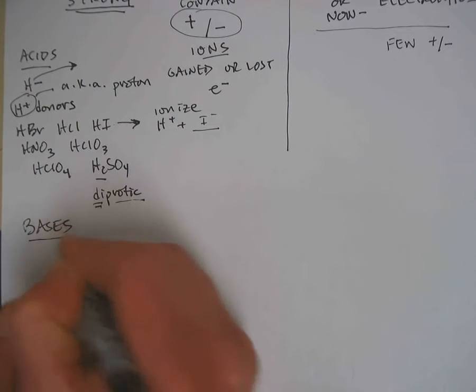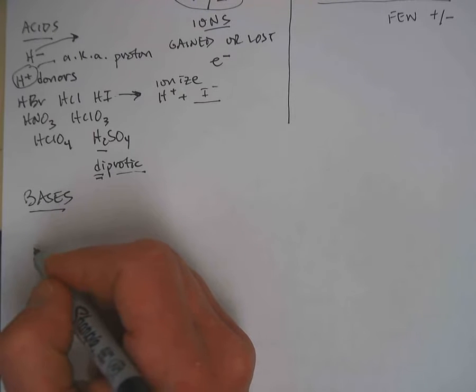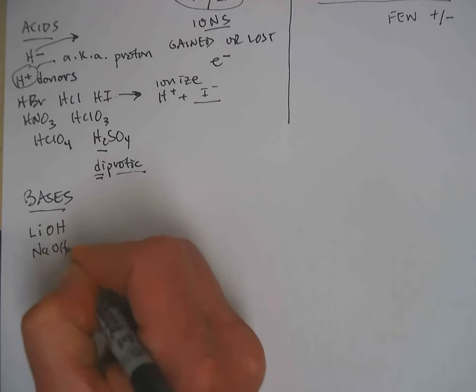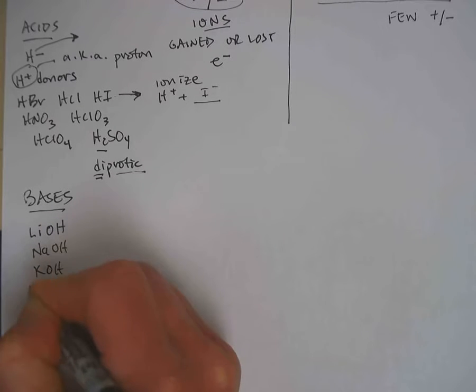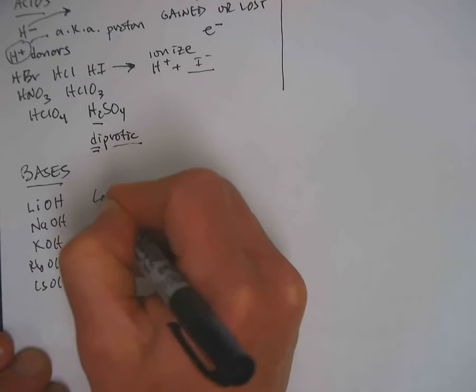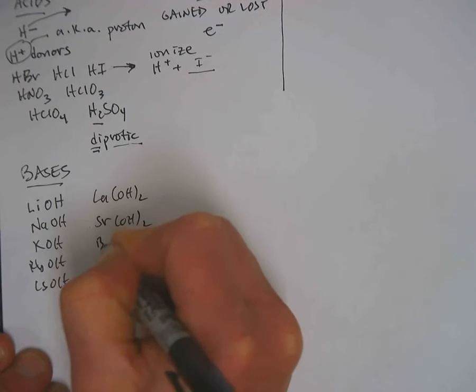And the strong bases are the alkali hydroxides: lithium, sodium, potassium, rubidium, and cesium, along with calcium, strontium, and barium.